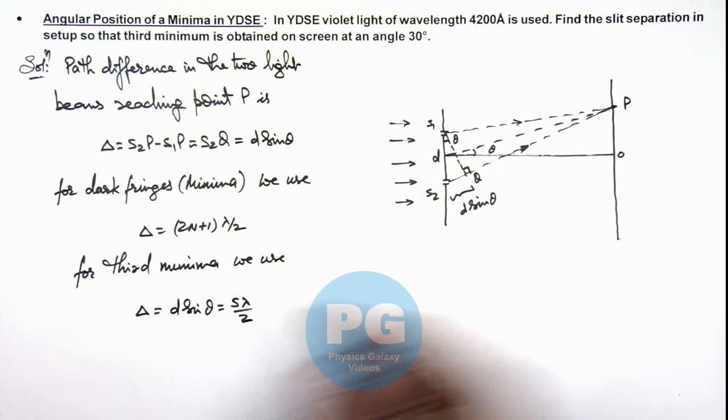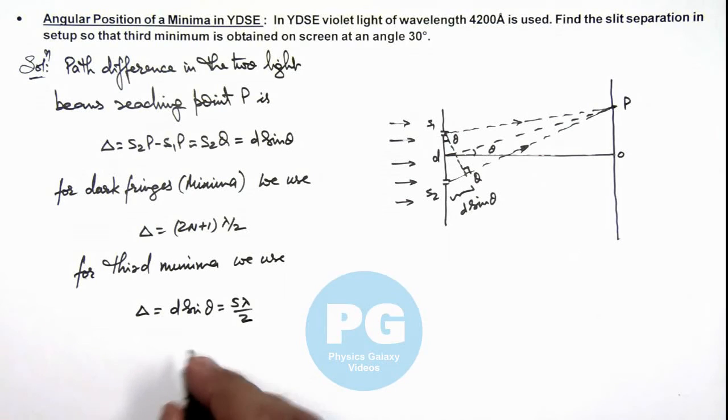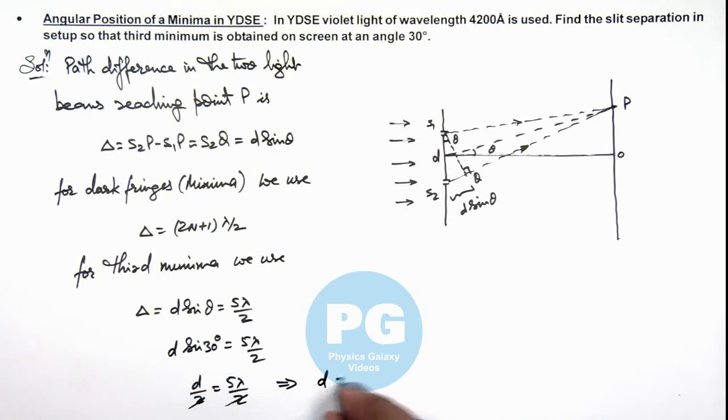So at theta equal to 30 degrees, here we can take d sine 30 degrees is equal to 5 lambda by 2. Or this is d by 2 is 5 lambda by 2, and here 2 gets cancelled out and it gives the value of d is equal to 5 times lambda, which is 4200 into 10 to power minus 10. And numerically this is equal to 2.1 into 10 to power minus 6 meter, that is the result of this problem.